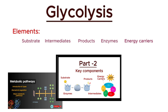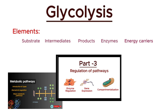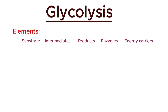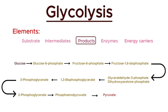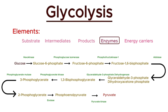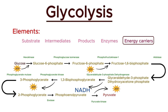Every metabolic pathway has five key elements. In glycolysis, the primary substrate is glucose. Throughout the process, several intermediates are produced, including glucose-6-phosphate, fructose-6-phosphate, and others, ending with pyruvate as the final product. Enzymes catalyze each step, speeding up the reactions. ATP and NADH are the energy carriers involved in glycolysis — ATP is consumed and produced during the process, while NADH is generated.